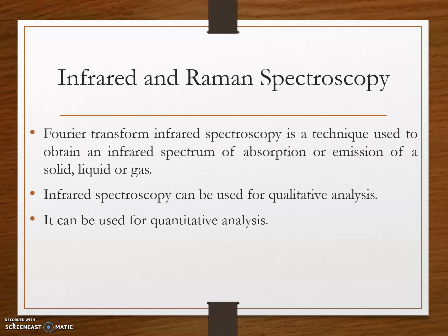The next technique is infrared and Raman spectroscopy. The infrared spectrometer measures changes in molecular vibrations and produces high-quality information about sample composition and concentration. Fourier Transform Infrared (FTIR) spectroscopy is used to obtain an infrared spectrum of absorption or emission of a solid, liquid, or gas. Both infrared and Raman spectroscopy fall under the category of vibrational spectroscopy.